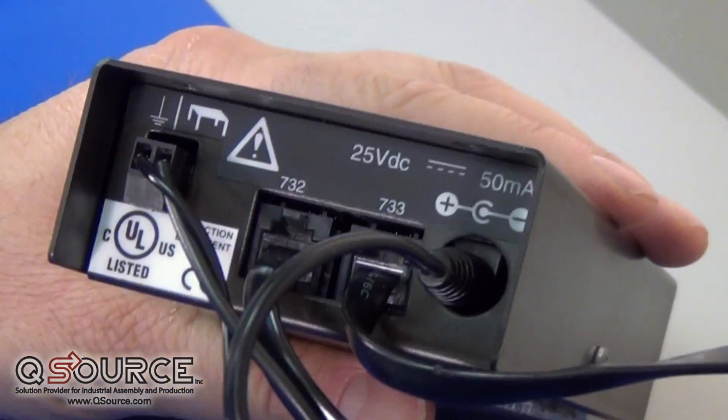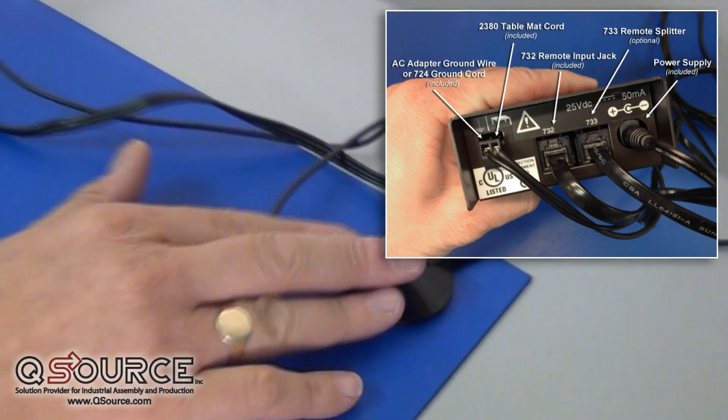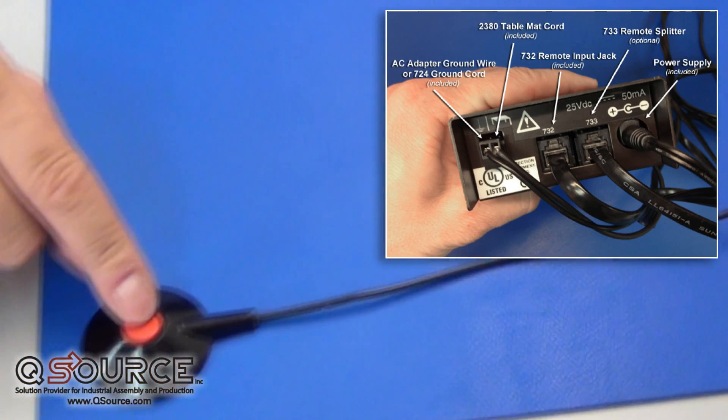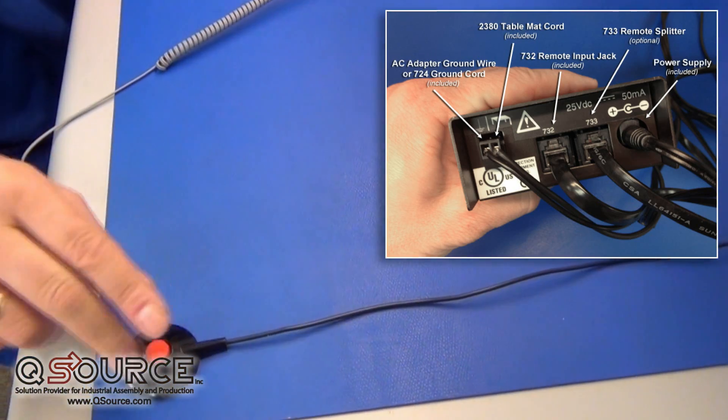To install the unit, you have to make sure that your mat or bench is grounded properly initially. The monitor then requires a second ground, which is here on the mat. So we have two snaps either on the bench work surface or on the mat.